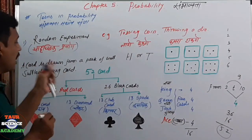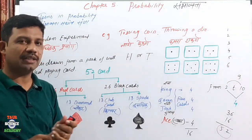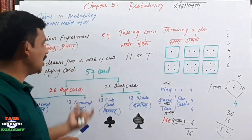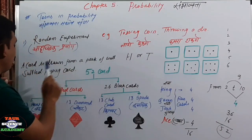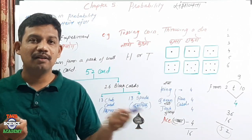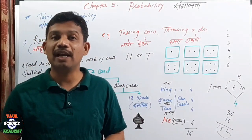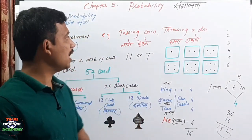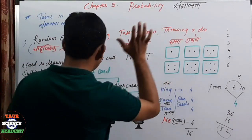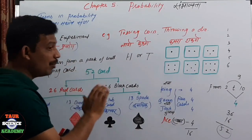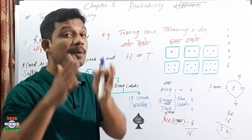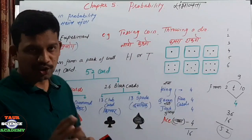So in a well-shuffled pack of playing cards there are 52 cards. A card is drawn from this pack — so there are 52 possibilities. Now let's look at the next term: Outcomes. We have experiments such as throwing a coin, throwing a die, or drawing one card from a well-shuffled pack. The possible results that can come are the outcomes.